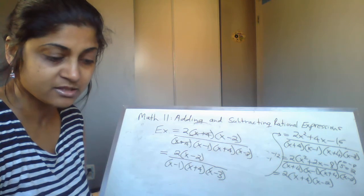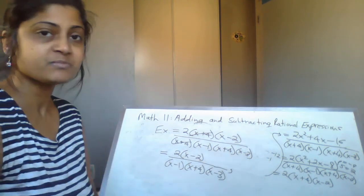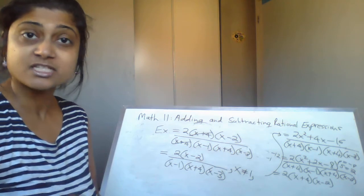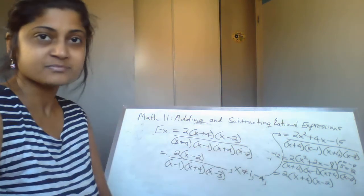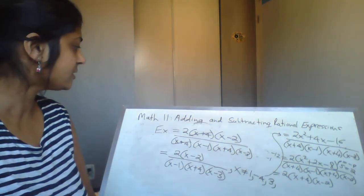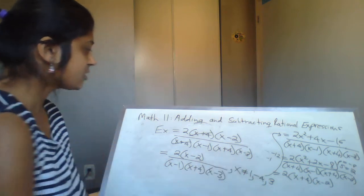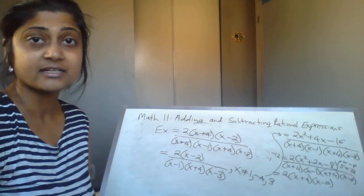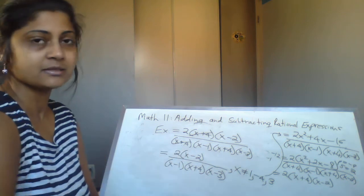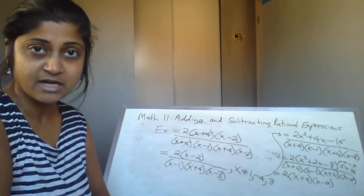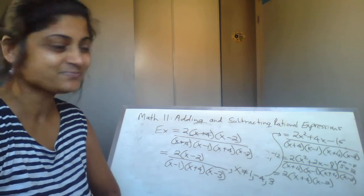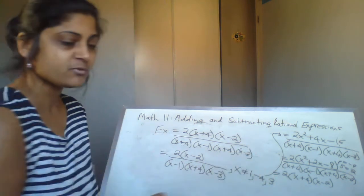Stating the restrictions: from (x − 1), x cannot equal 1; from (x + 4), x cannot equal negative 4; from (x − 3), x cannot equal 3. Even though (x + 4) cancelled out, it doesn't add an extra restriction here because there were two of them. However, if in an intermediate step a factor that cancels out is unique and different, you must still include it as a restriction in your final answer.